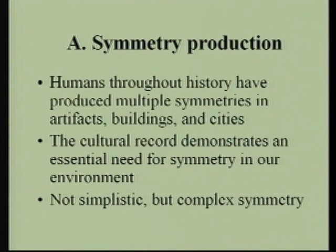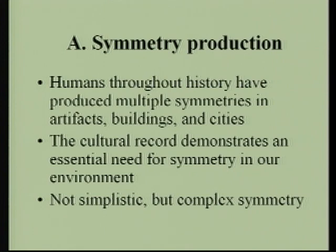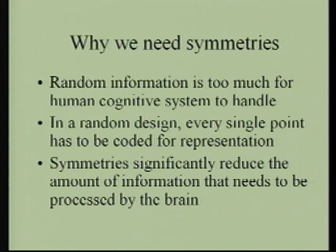Let me begin with symmetry production. Human beings throughout history have produced multiple symmetries in artifacts, buildings, and cities. If we look at the cultural record of humankind, it demonstrates we have an essential need for symmetry in our environment — otherwise, why produce so many symmetries? I'm going to refer to complex symmetries, never just a simplistic overall symmetry, which is what most architects think of when they hear the word.